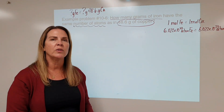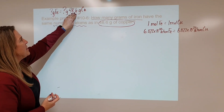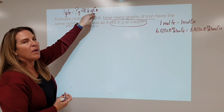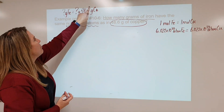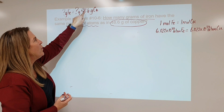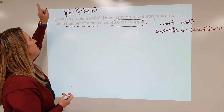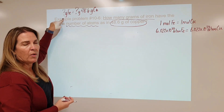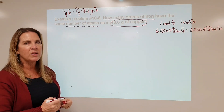They have the same number of particles; that doesn't mean they have the same mass. So, 48.6 grams of copper has a number of atoms in it. The question is: how many atoms of copper would 48.6 grams be? And once we know that, then we can say that's the number of atoms of iron that we would use, and then figure out what the mass of that would be. This is a relationship problem.